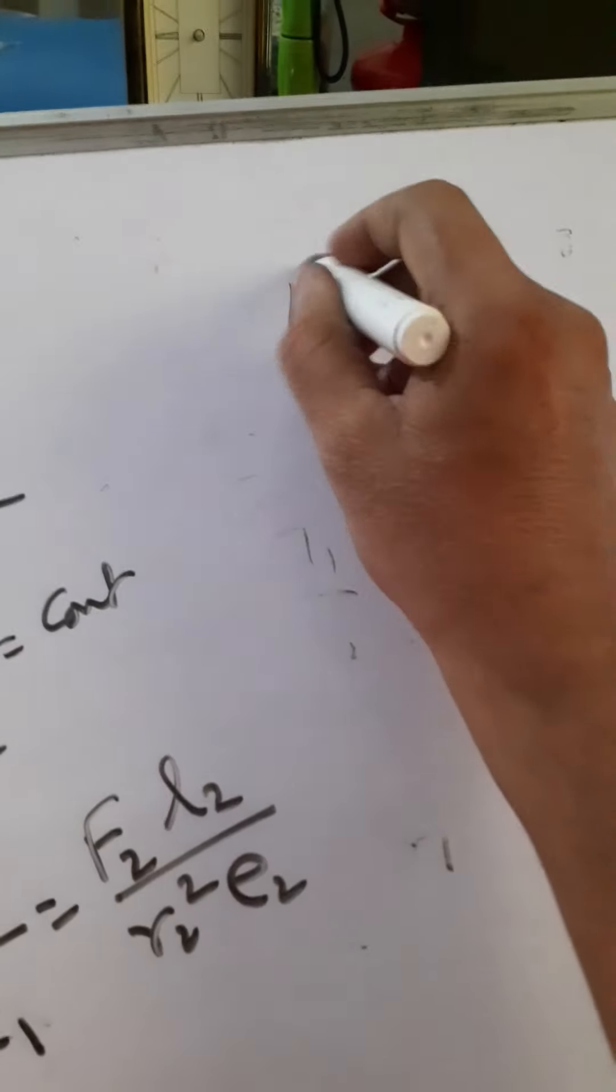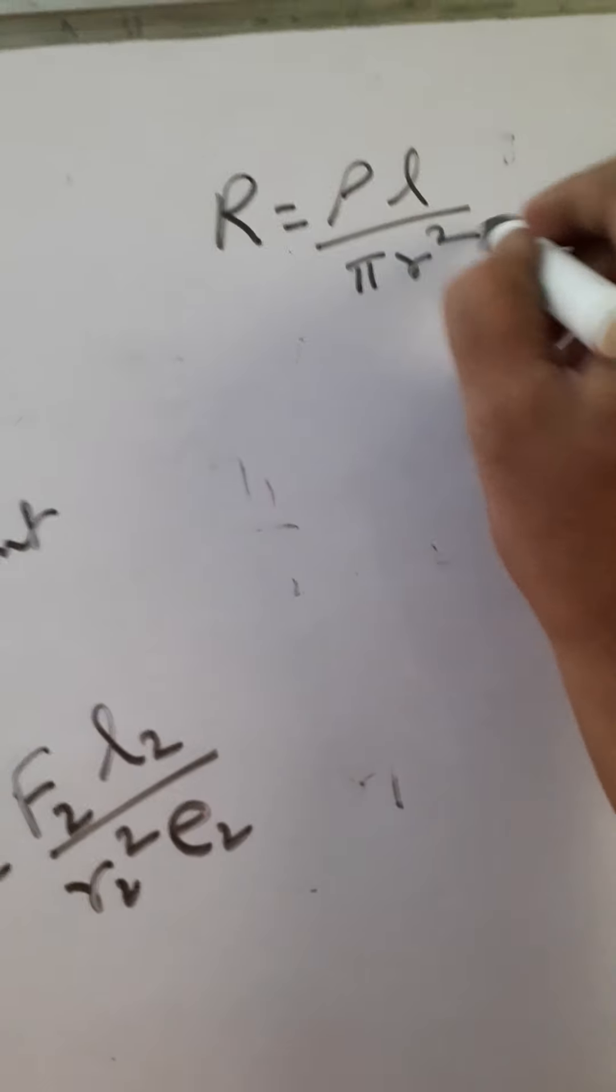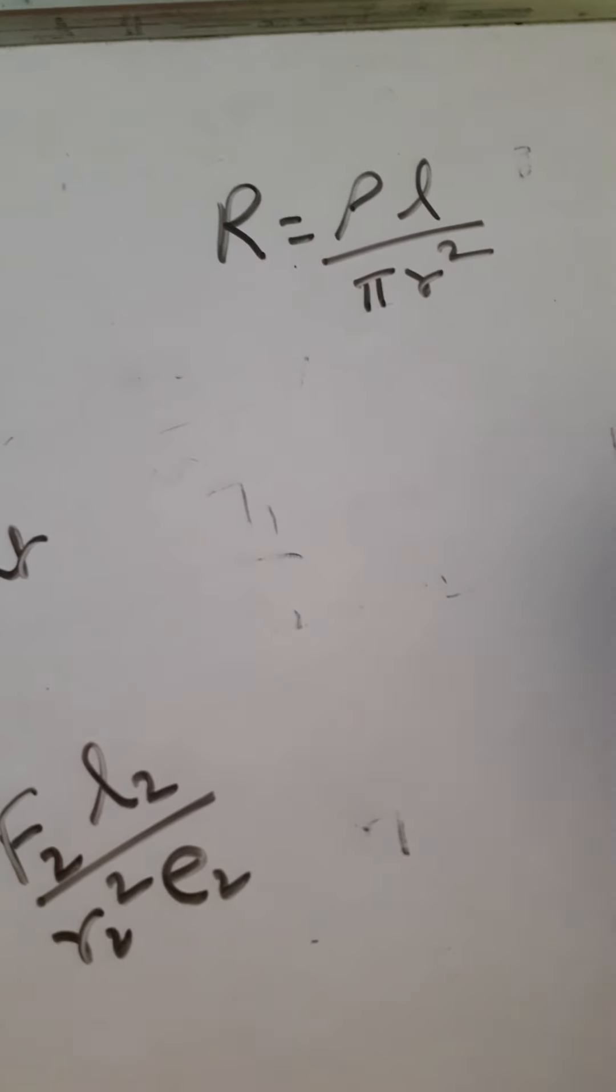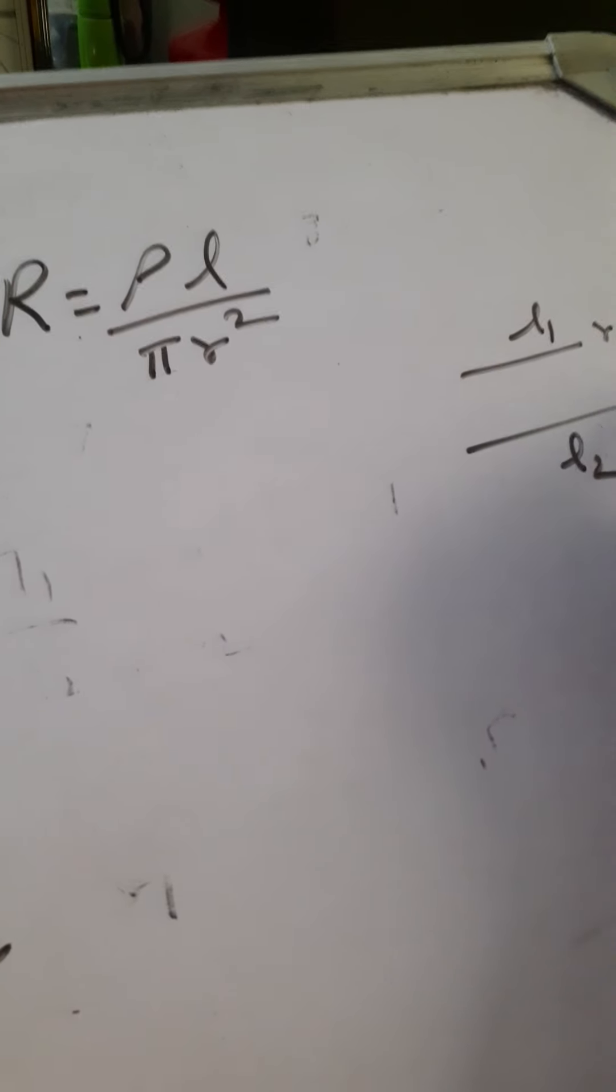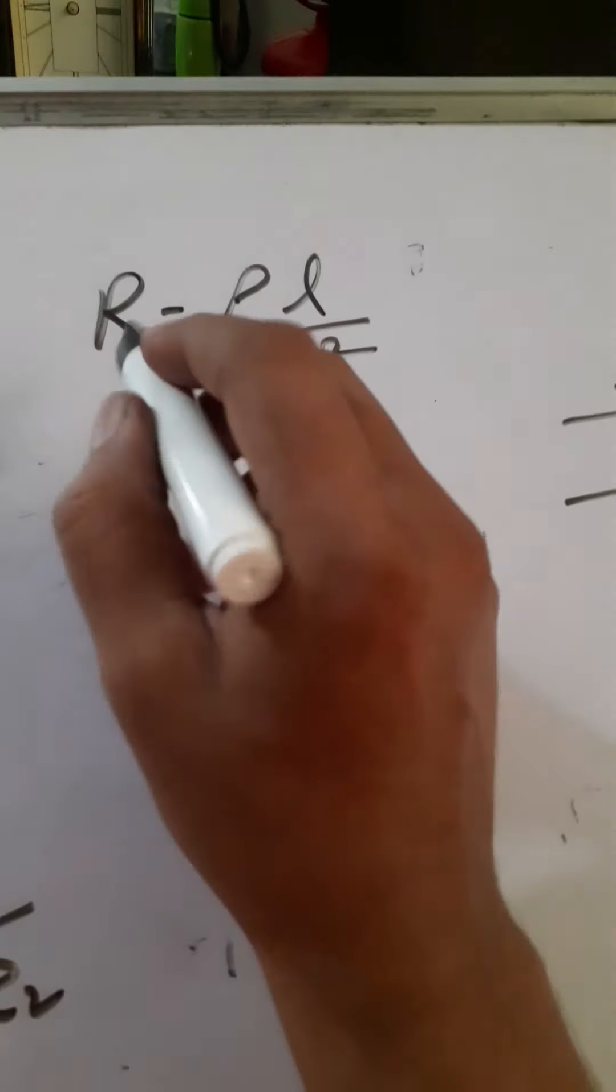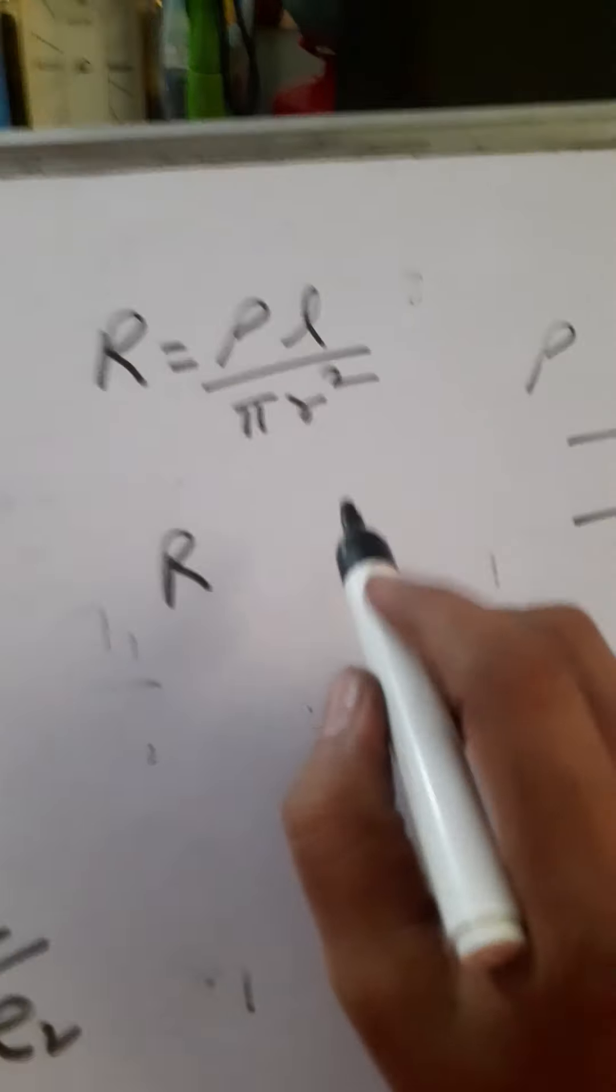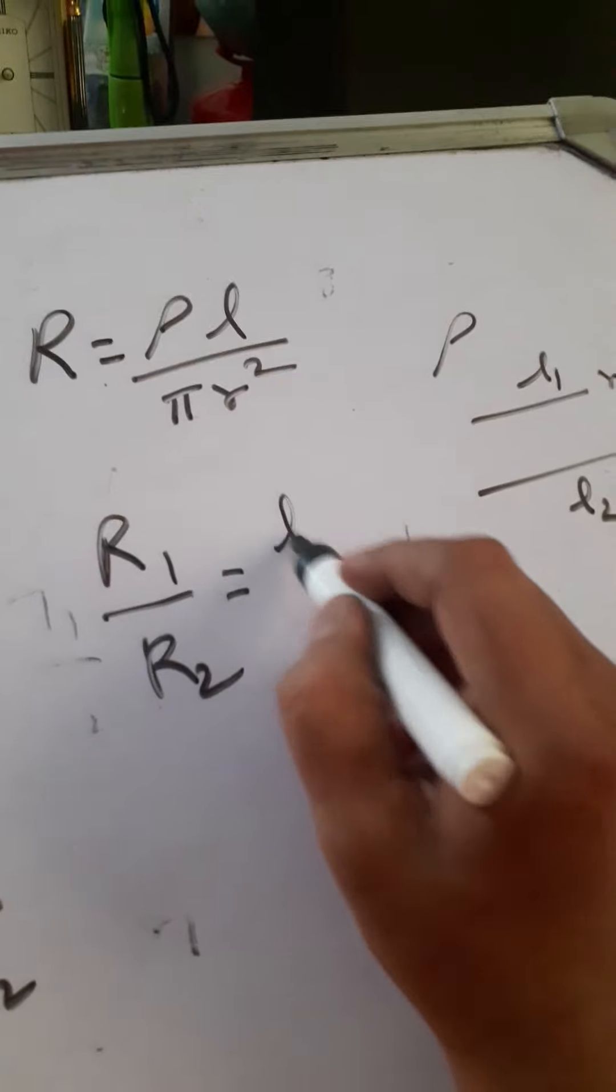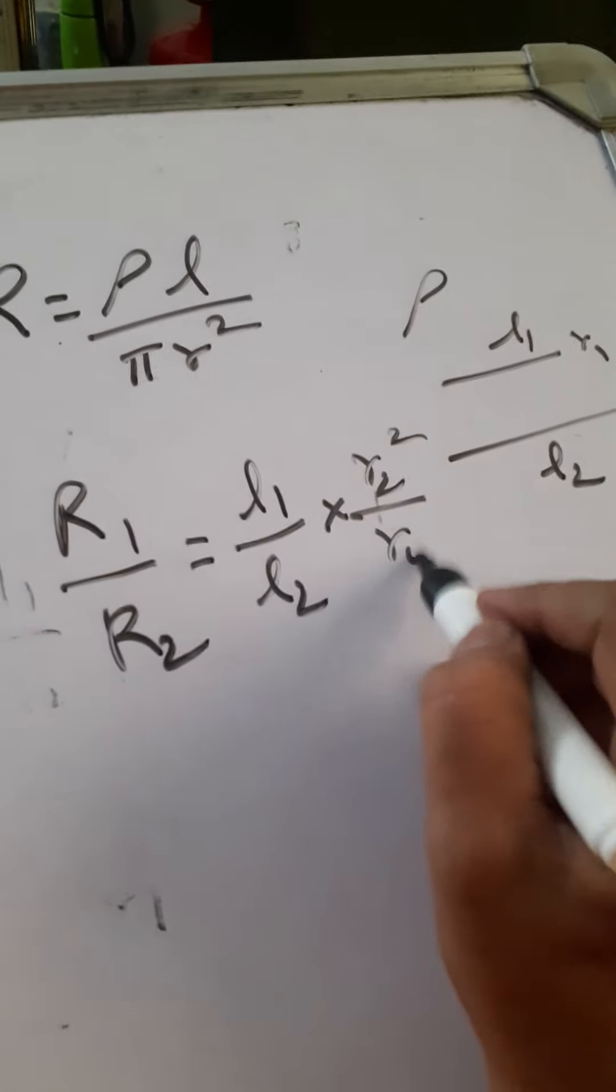Like that, resistance of a wire: Rho L by pi R square. So two wires made of copper material, lengths L1 L2, radii R1 R2. Find the ratio of their resistances. Resistance ratio is required. Rho depends on nature of material. R1 by R2 equals L1 by L2 into R2 square by R1 square.